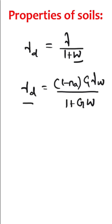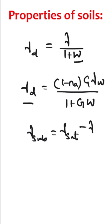And also, submerged unit weight gamma_submerged is given by saturated unit weight minus unit weight of water.